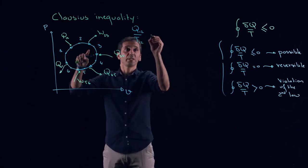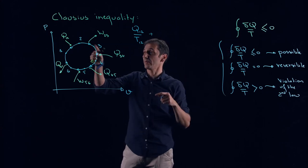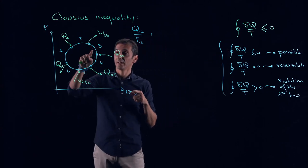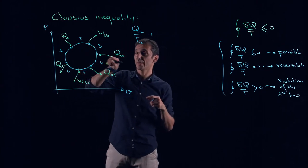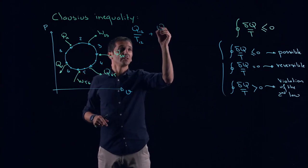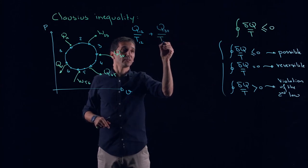Then from 2 to 3, what do we have? We have work. You see, work, we don't care about it. So just forget it. It's only heat. From 3 to 4, we have also heat. So plus Q3,4 over T3,4.